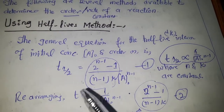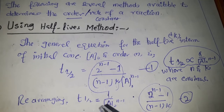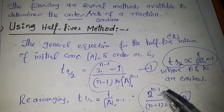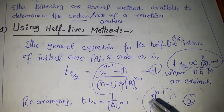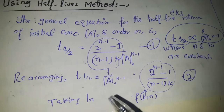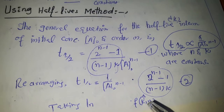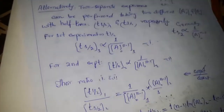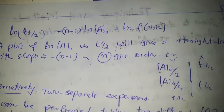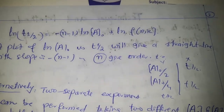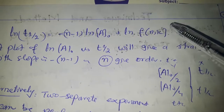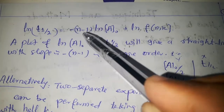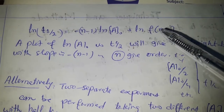We can rearrange this equation so that half-life is a function of the initial concentration, with n and k as constant terms. Taking the logarithm of both sides, the denominator moves up making the power negative, giving us log(t½) expressed in terms of log of initial concentration and a constant involving log of n and k.